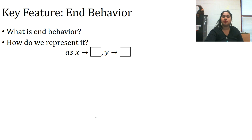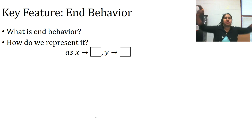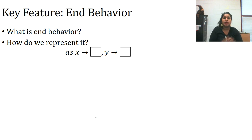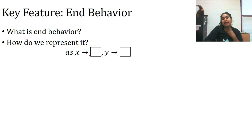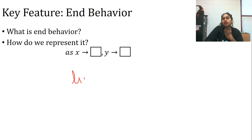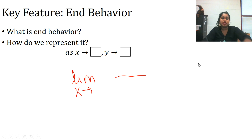The final thing: end behavior. What is end behavior? You're literally talking about the ends of the graph, especially if the graph goes off to infinity. You might have seen it as 'as x approaches [value], y must approach [value].' Eventually we'll learn how to turn that into a limit.